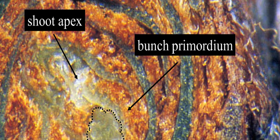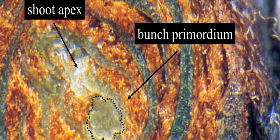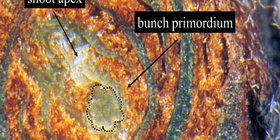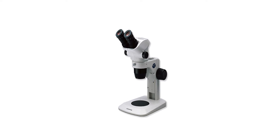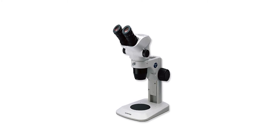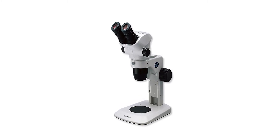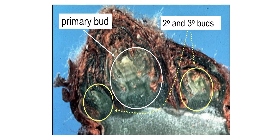It is common practice in table grape production to dissect dormant buds to assess fruitfulness and bunch number per node. This method requires a dissecting microscope and a detailed knowledge of bud anatomy to interpret and describe the relatively small translucent structures that are the bunch primordia. Estimating bud fruitfulness by microscopic dissection has the advantage of providing immediate results, and while some training and patience is required, most people could undertake these assessments. There are also agronomy consultants who undertake bud dissections on a regular basis.